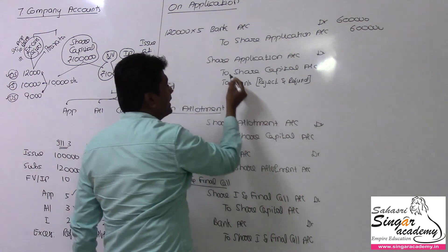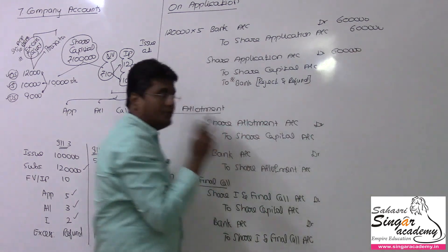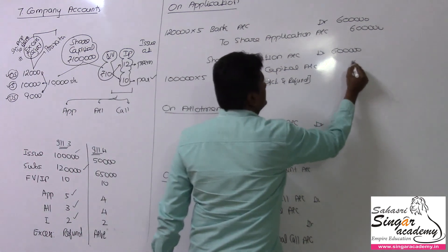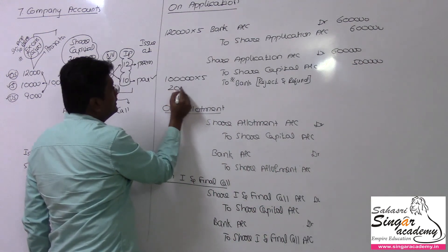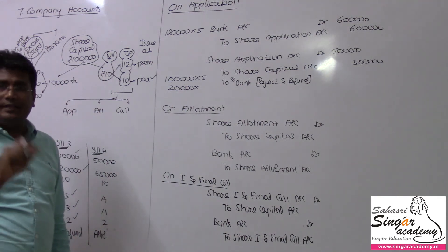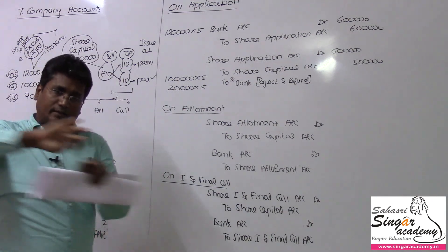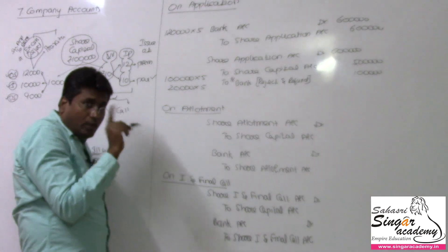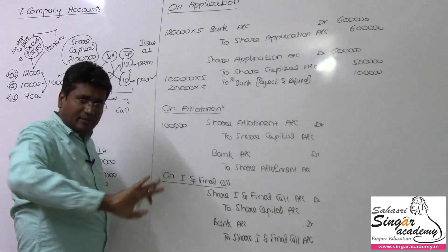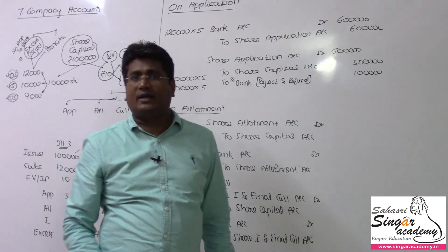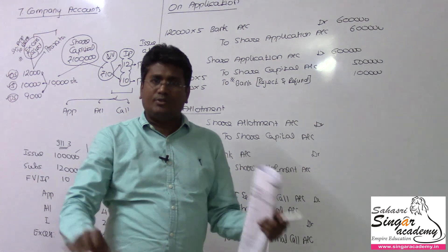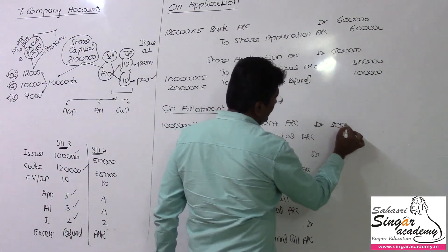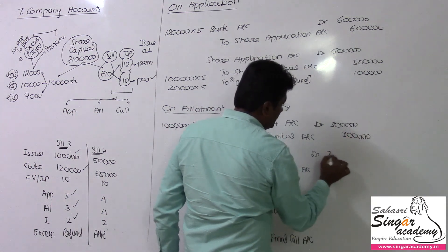The application money received is 6 lakhs. The allotment amount due is 3 lakhs. For the allotment, the due entry and collection entry — 3 lakhs. We got this answer, right?